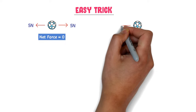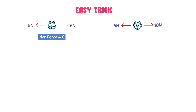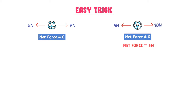Secondly, consider this example where a 10N force acts on the ball in one direction. What about the net force? The net force is not equal to 0 — we can see it is 5N. The ball goes in that direction, so there is a net movement of the ball.